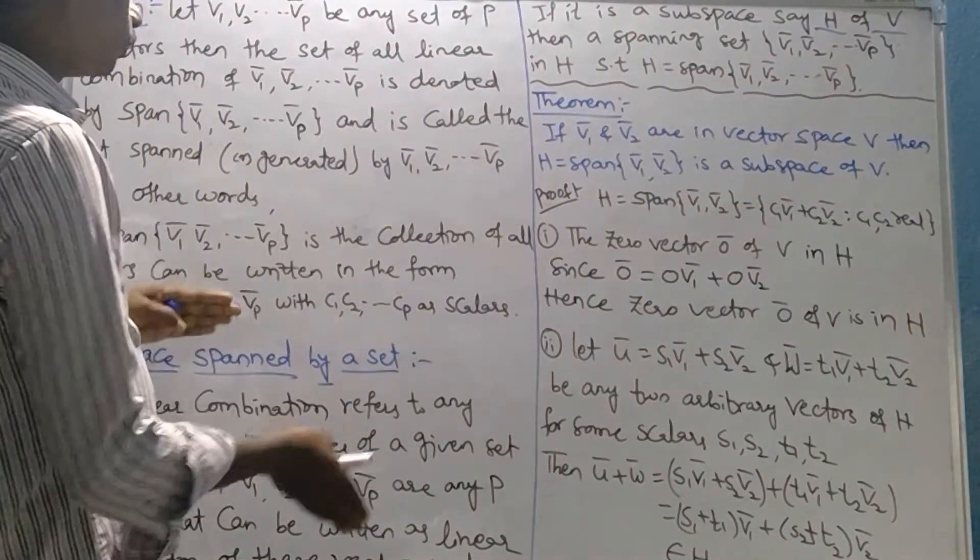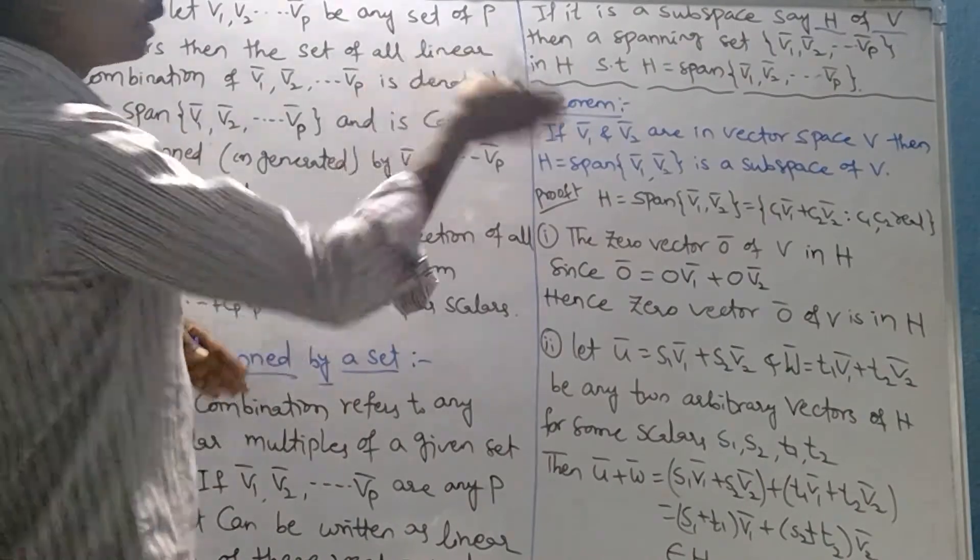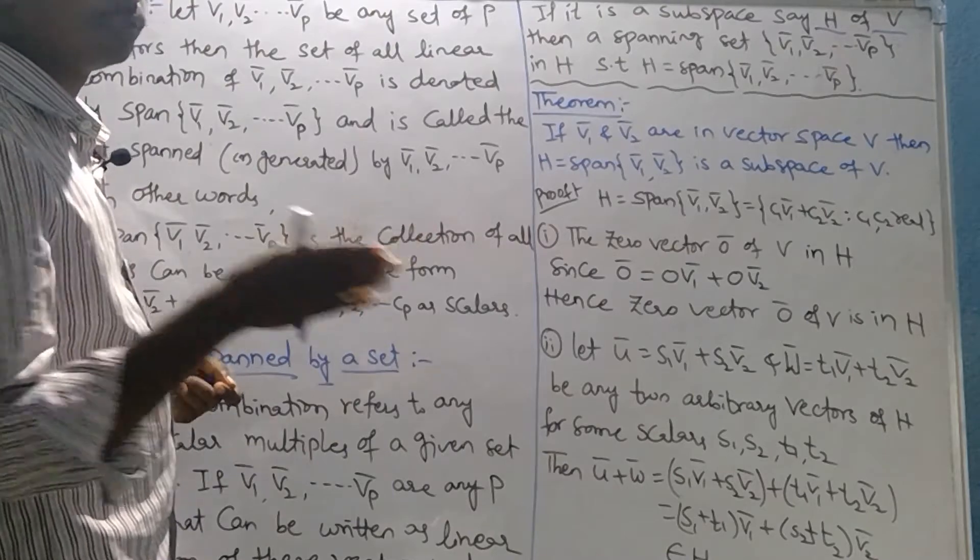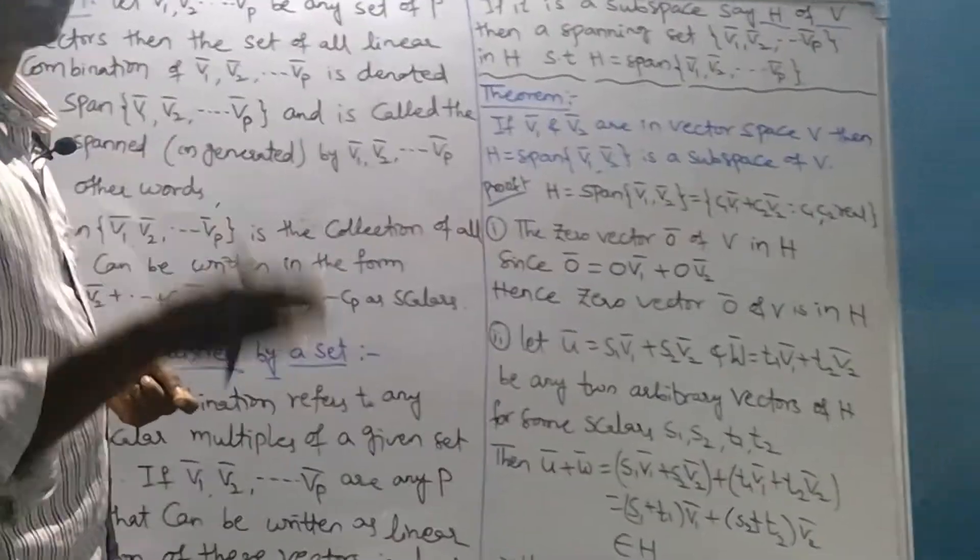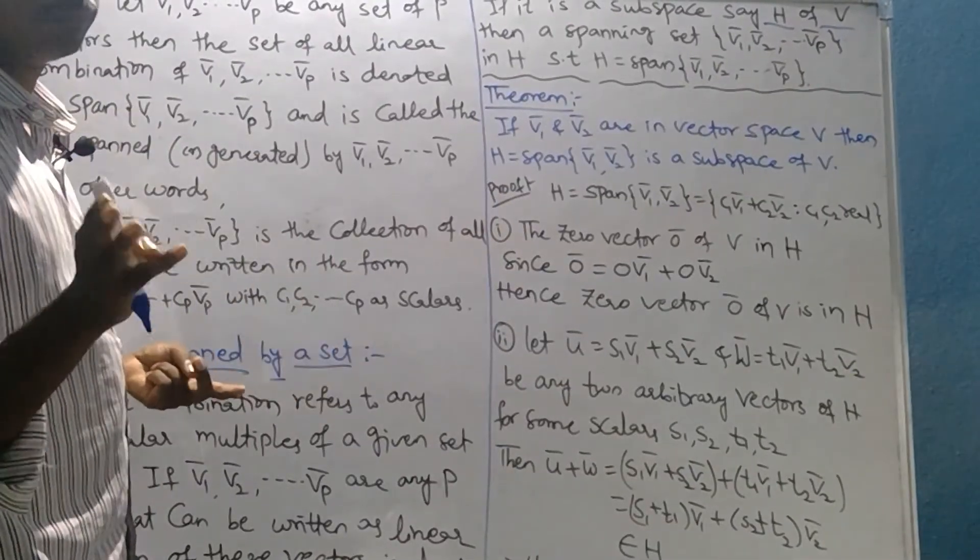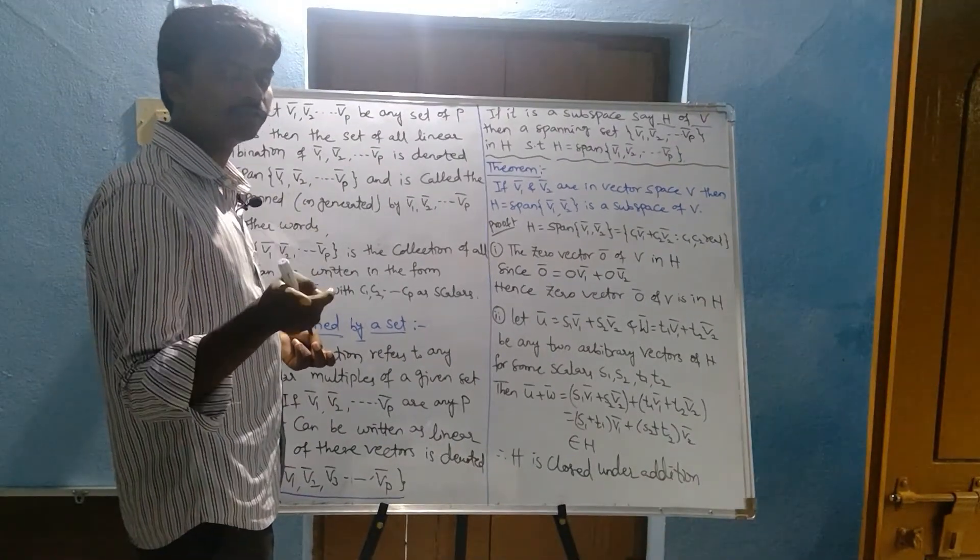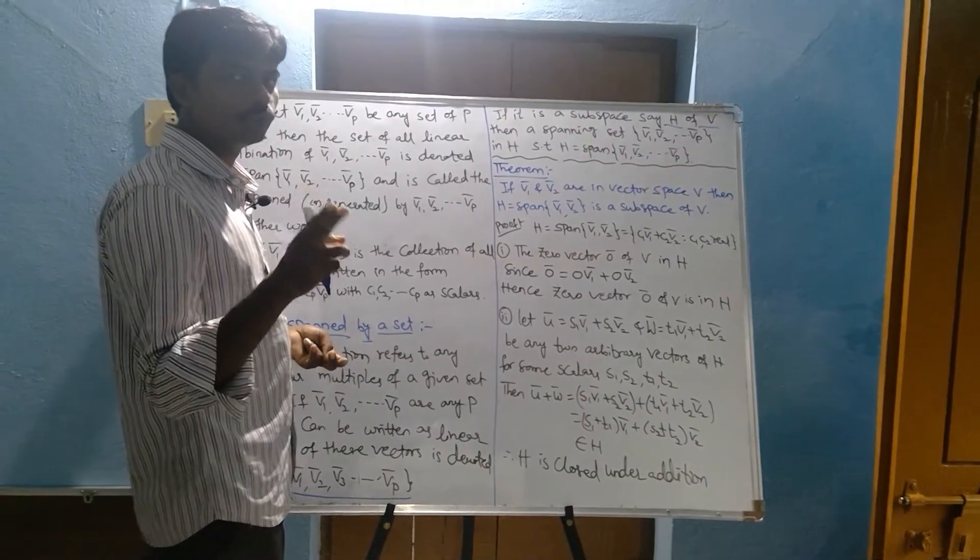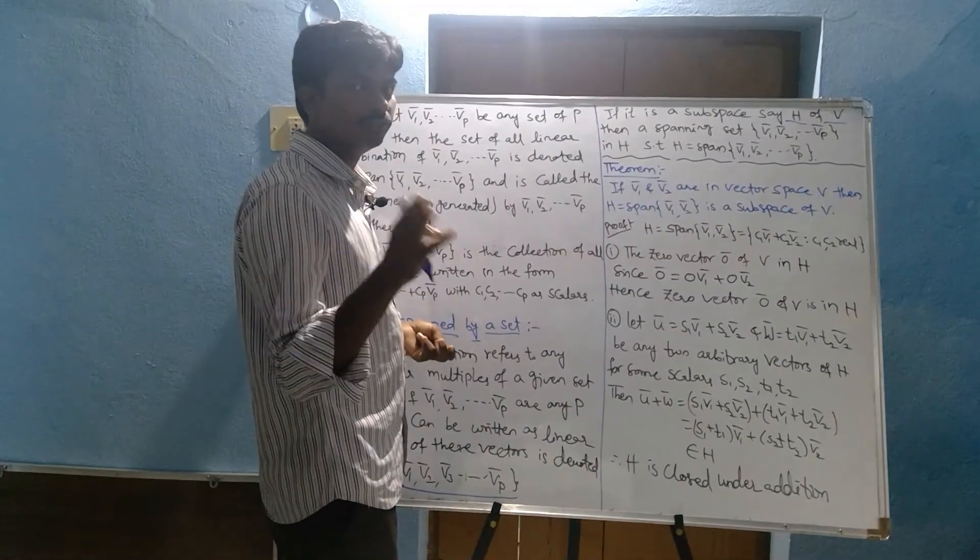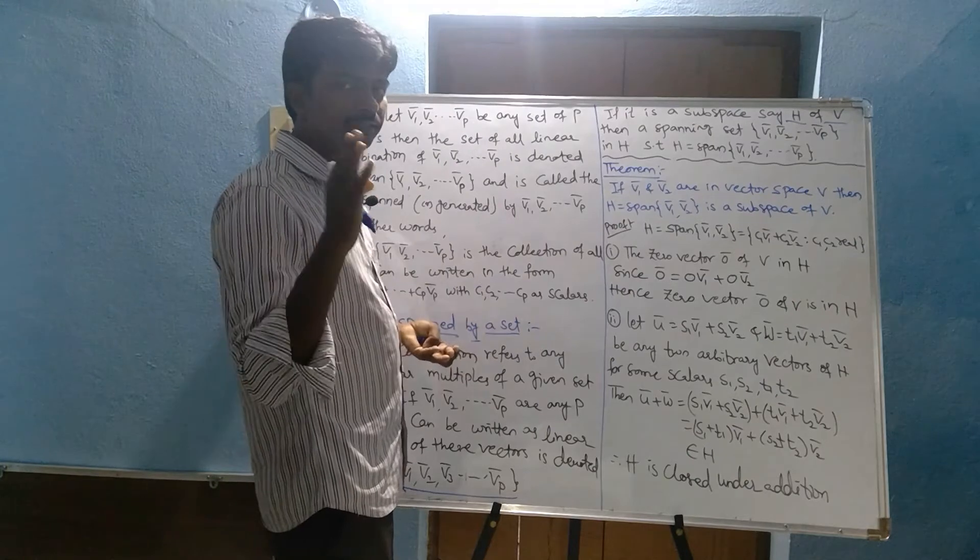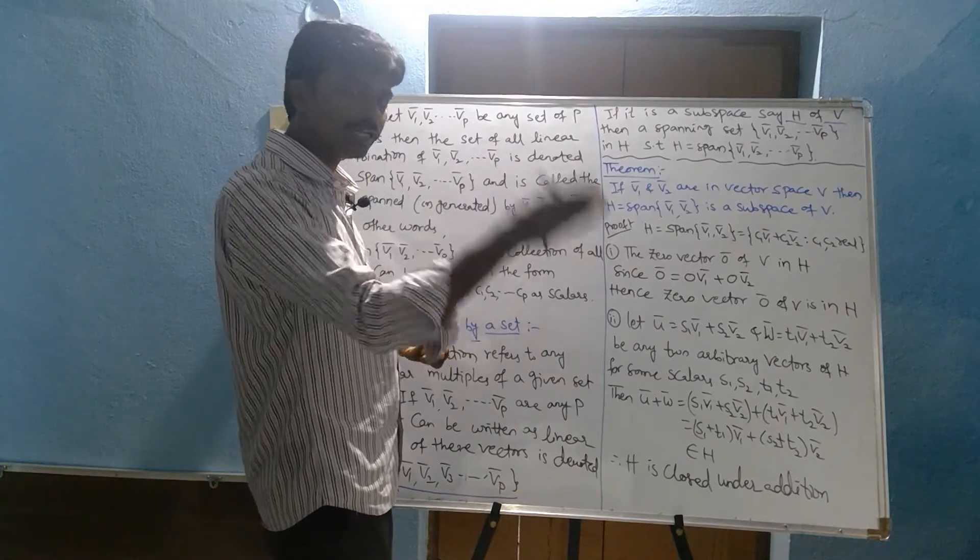Now these two definitions we are using in this theorem and also the subspace definition. Do you know the subspace definition? There are three properties: one is the zero vector, second one is U bar plus V bar, and third one is C into U bar. First one is the zero vector, second one is closure under addition, and third one is closure under multiplication.